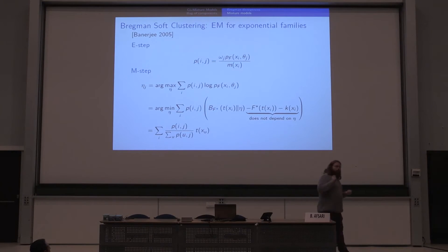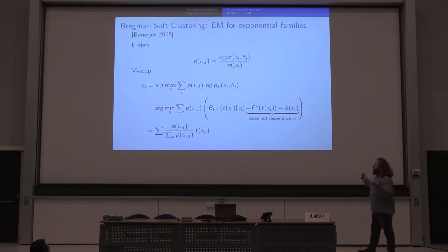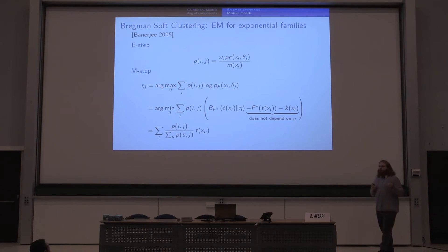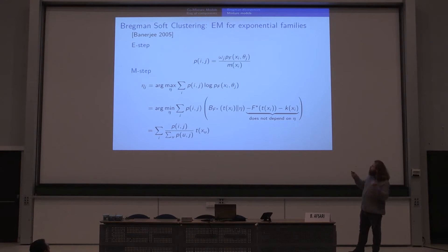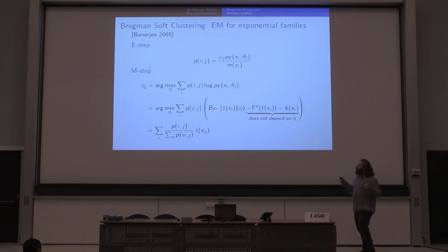In the context of information geometry for exponential families, we have a variant of the famous expectation-maximization algorithm called the Bregman soft clustering algorithm. As usual, we have two main steps: the expectation step, which computes the responsibility matrix, and the maximization step, which can be rewritten using Bregman divergences — specifically as a minimization of a sum of Bregman divergences. This part is simply a Bregman centroid, which is a centroid of the sufficient statistics of the observations, justifying the term 'clustering.'